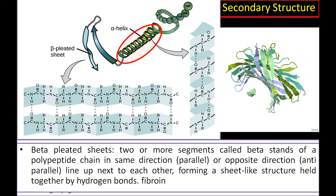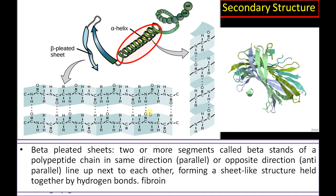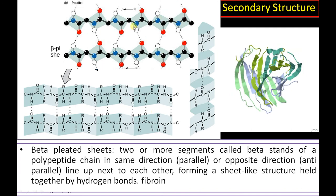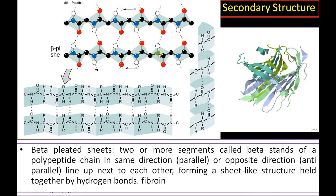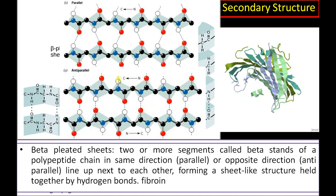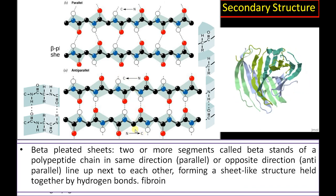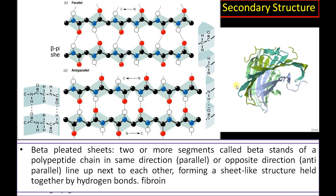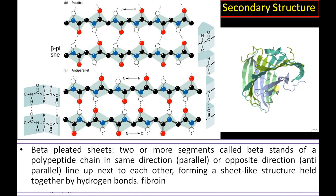A classical example is silk fibroin, which is made up of many beta sheets held together by hydrogen bonds. There are two possibilities: if the polypeptide chains involved run in the same direction — from N-terminal to C-terminal — it is called a parallel beta sheet. If adjacent segments run in opposite directions, it is called an antiparallel beta sheet. In short, secondary structures are primarily held by hydrogen bonds, apart from the peptide bond.